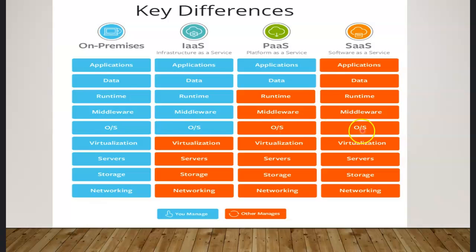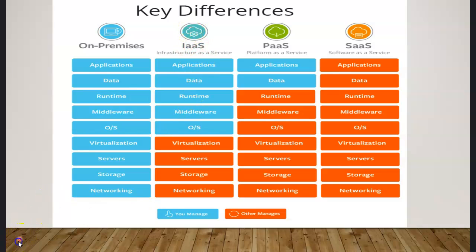In the PaaS and SaaS models, the operating system is also controlled by Microsoft or other cloud service providers, so you don't have control over that and can only manage your applications and data in the PaaS model. In the SaaS model, you don't even manage application data — you just work on it. For example, Office 365, Outlook, Gmail, or GoToMeeting — these are SaaS-based models and are very easy to use. It all depends on what your business demands. IaaS is definitely more expensive than SaaS and PaaS, but if your application requires that extra control, the additional cost may be justified.